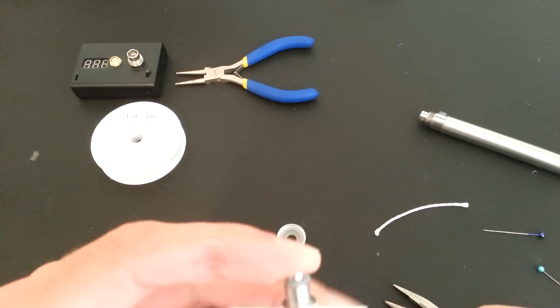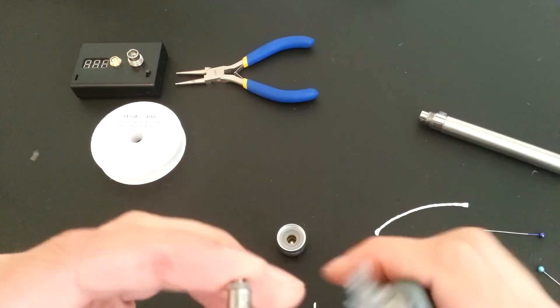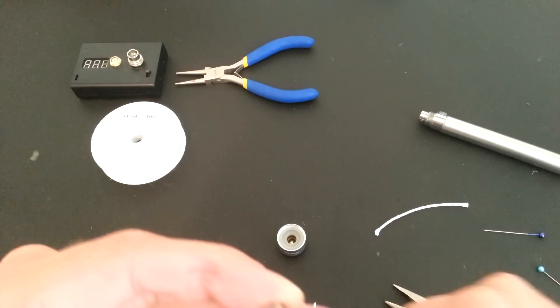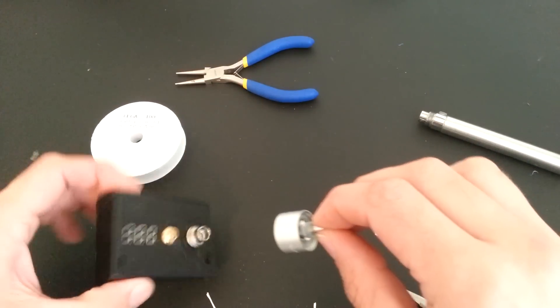Lastly, we trim up the ends of the 1mm wick. Reinsert into our base.